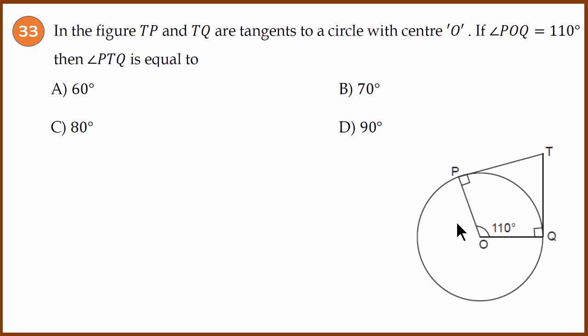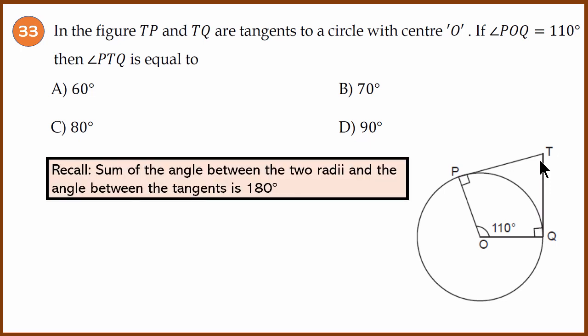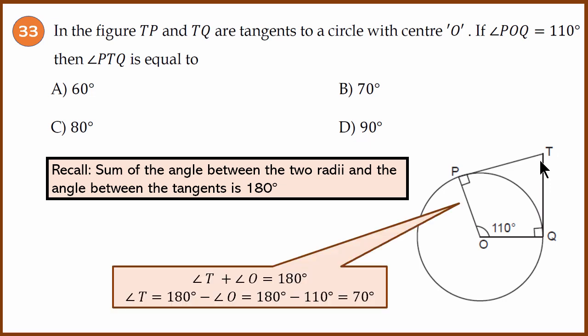This is a circle tangent question. In these kinds of questions, angle O and angle T are supplementary angles, so their sum is 180 degrees. We know angle O, so angle T equals 180 minus O, which is 70 degrees. The answer is 70 degrees.